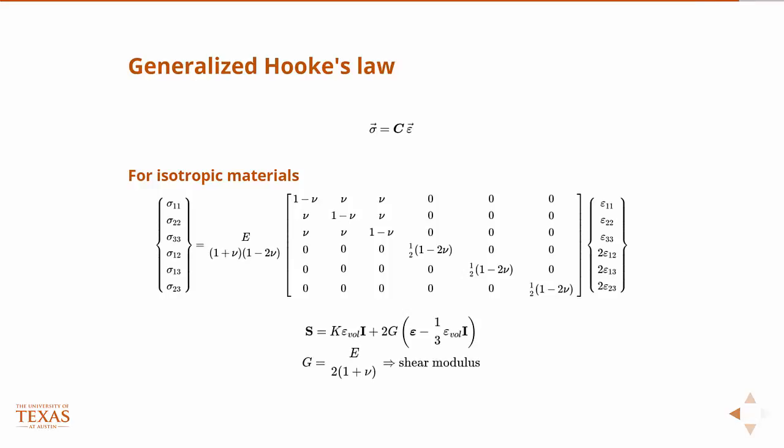We can also write it more compactly. Going back to our tensor notation, or our matrix notation, we can write it like this, where we use K, the bulk modulus, times the volumetric strain. Remember what I said, the bulk modulus times the volumetric strain, just using our equation for the definition of the bulk modulus, gives you the mean stress, the diagonal component of the stress tensor. So then if you multiply that by the identity matrix and then add that to two mu, or two G, where G is the shear modulus, times the full strain tensor minus the volumetric strain, or the average of the volumetric strain. Anyway, these two equations are the same.